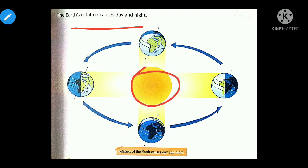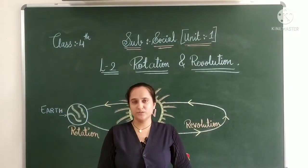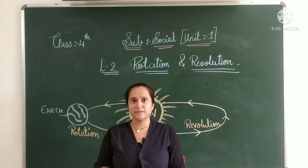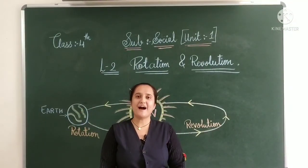The Earth's rotation causes day and night. When the Earth spins, the part in direct sunlight has daytime and the opposite part has night. You can see the different day and night times as the Earth spins. I hope the concept of rotation is now clear to you. Practice the exercise given at the back and solve only the questions related to rotation. Bye and take care.